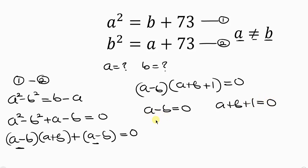Solving these cases one after the other — case 1: moving negative b to the right-hand side gives a equal to b. However, from the given question a is not equal to b, so we're going to be rejecting this case.